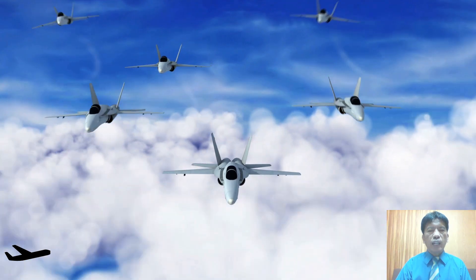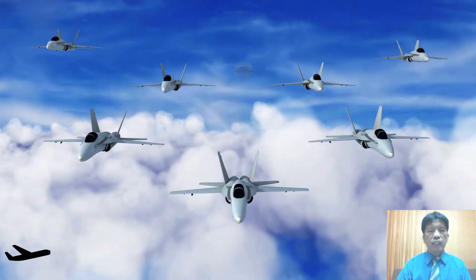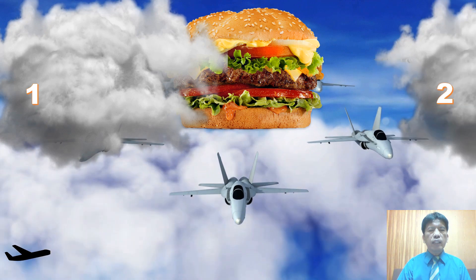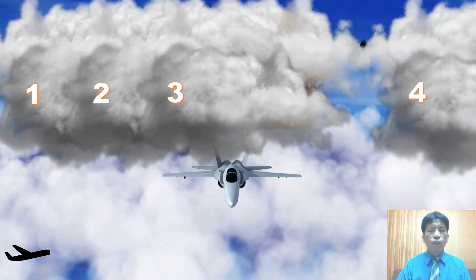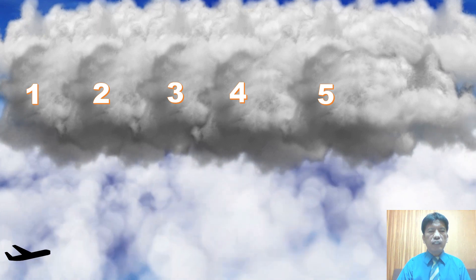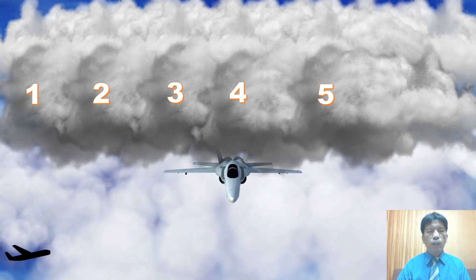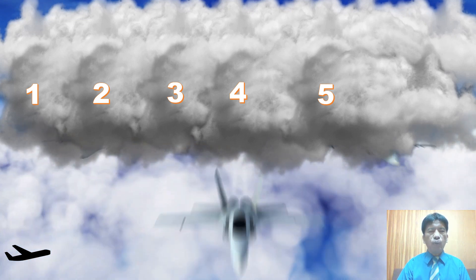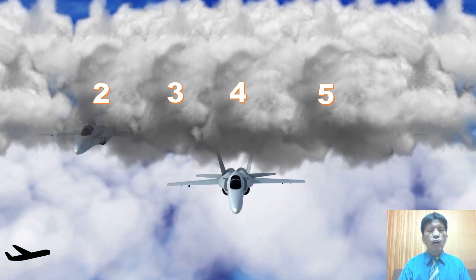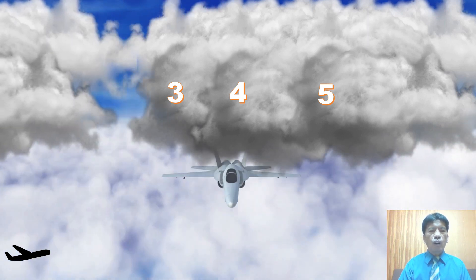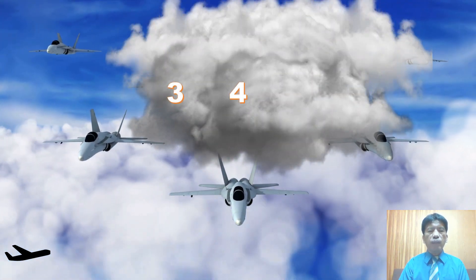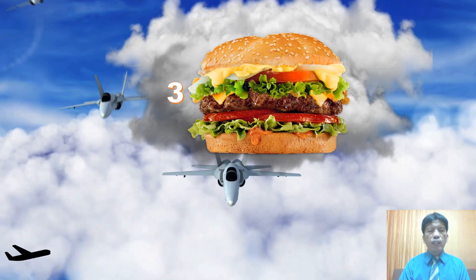Very good! Here is our game today. You can see fighter jets and a hamburger. The hamburger will be covered by clouds — number one, two, three, four, and number five. Guess where is the hamburger. Let's click: number one — no, number two — no, number five — no. Yes! The hamburger is in cloud number three!